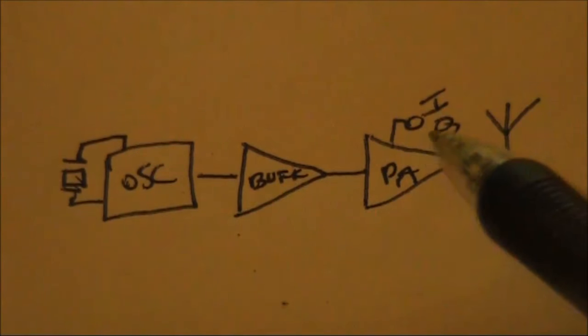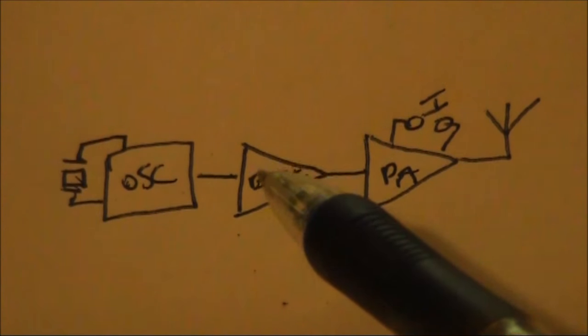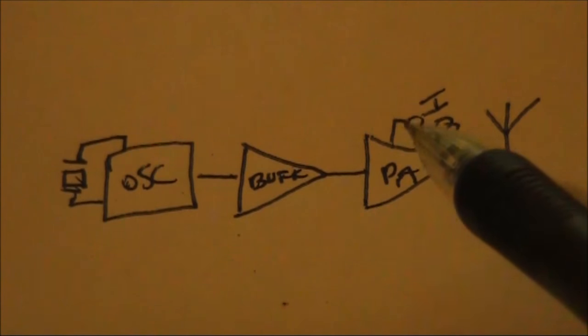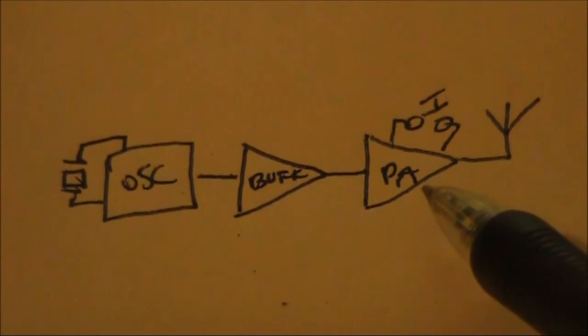If the signal is there but at much lower than the expected power output, then you'd check the buffer stage and then the final amplifier. Or maybe the signal is on all the time, then you'd check to see if there's something wrong in the keying circuit, keeping the transmit on.